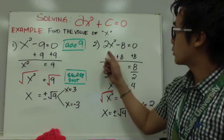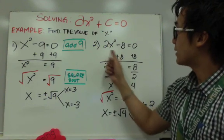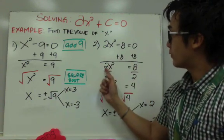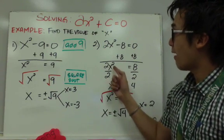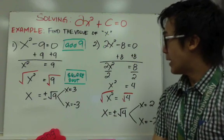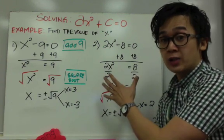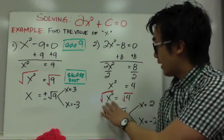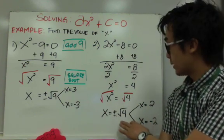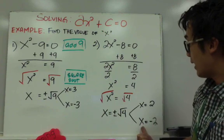For example number 2, we have 2x squared minus 8 equal to zero. We add 8 on both sides to get 2x squared equal to 8, then divide both sides by 2 so that x squared is by itself, giving us x squared equals 4. To get rid of the exponent of 2, we take the square root of both sides. The square root of x squared is x, and the square root of 4 is plus or minus 2 — since 4 is a perfect square. So x equals 2 and x equals negative 2.